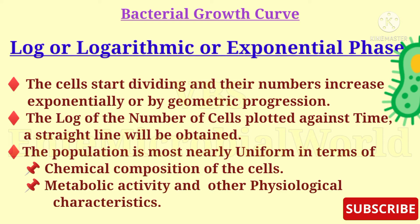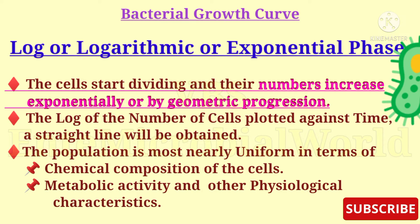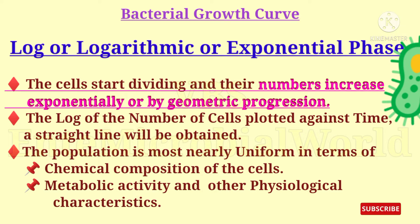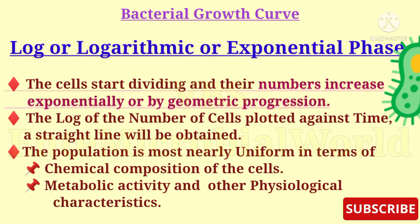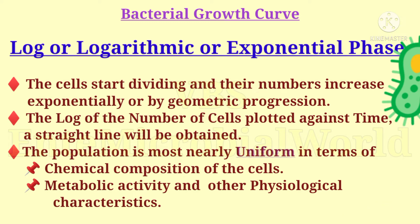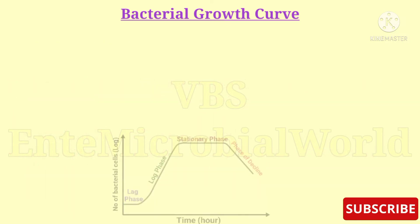Following the lag phase, the cells start dividing and their numbers increase exponentially or by geometric progression with time. The log of the number of cells plotted against time gives a straight line. In the log phase, the population is most nearly uniform in terms of chemical composition of cells, metabolic activity, and other physiological characteristics.